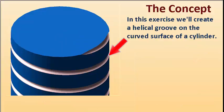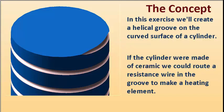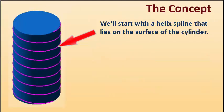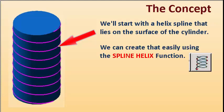In this exercise, we'll create a helical groove on the curved surface of a cylinder. If the cylinder were made of ceramic, we could route a resistance wire in the groove to make a heating element. We'll start with a helix spline that lies on the surface of the cylinder — we can create that easily using the spline helix function.